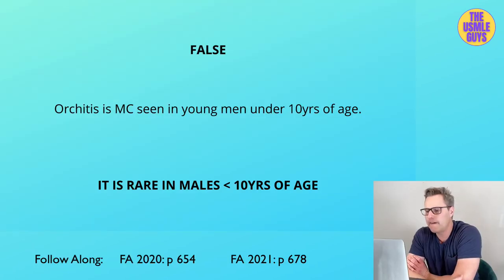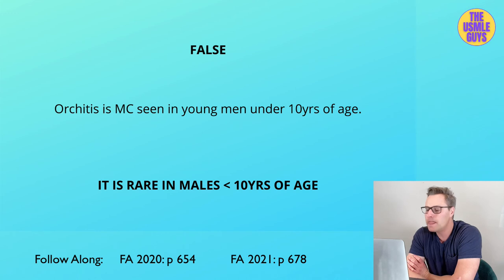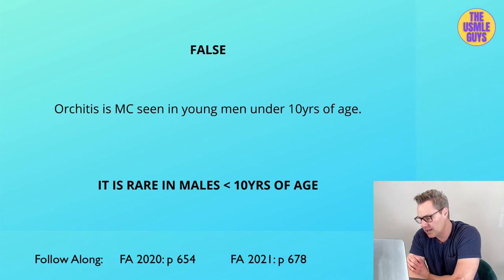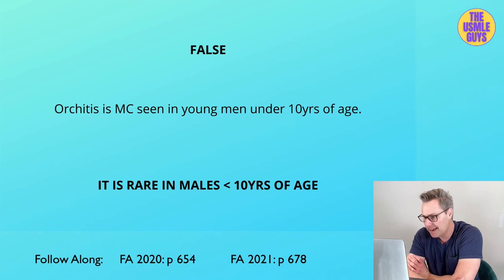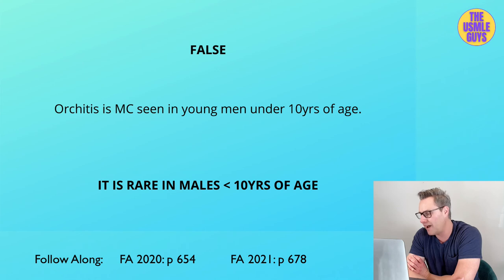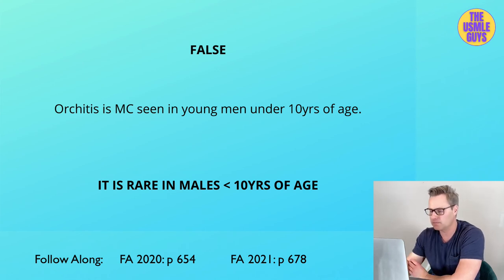This is false. Orchitis is inflammation of the testes, presenting with both pain and swelling. This is actually very rare in young males less than 10 years of age, but keep in mind that mumps can cause orchitis. If someone has mumps orchitis, remember this increases their risk of infertility, so you always want to recommend the MMR vaccine to prevent this.